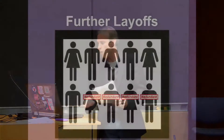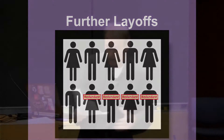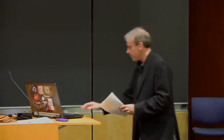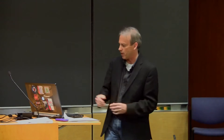To make the math simple: one person was making enough for three other people, so I lay off one more person. Now we're in a situation where we've got four involuntarily unemployed people who don't have the income to purchase the goods and services we can already afford to produce. We've got one entrepreneur who is content but would be happier if sales were higher, and six willing workers who do have jobs but are paying some sort of cost for the unemployment — either Uncle Bob is living with us again, or something like that.